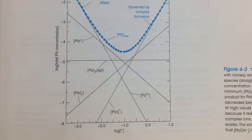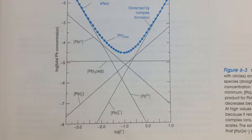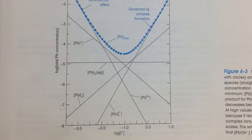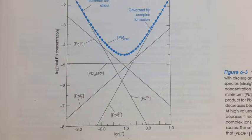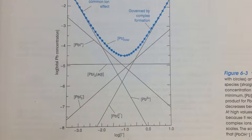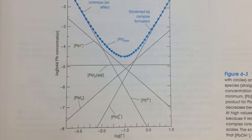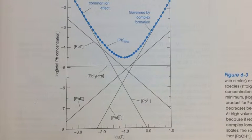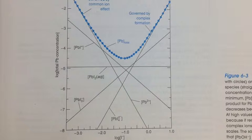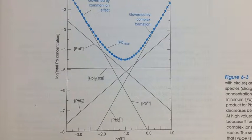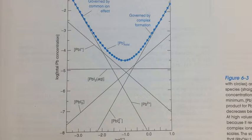This graph from the analytical textbook shows our answer in graph form. Along the left axis is the log of the concentration of lead, and on the bottom is the log of the concentration of the iodide.